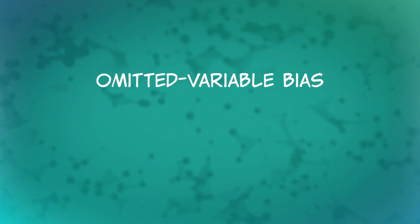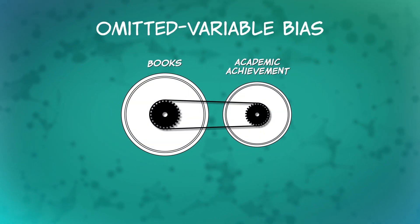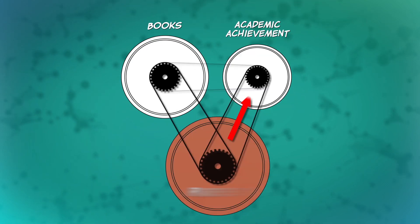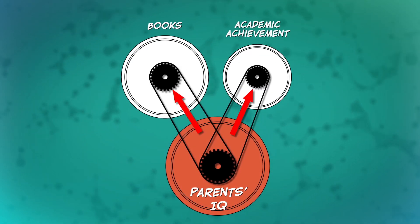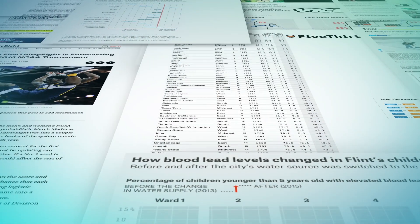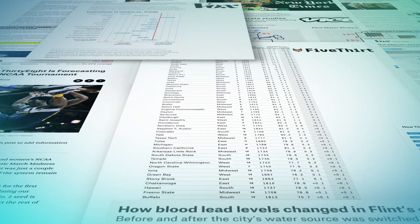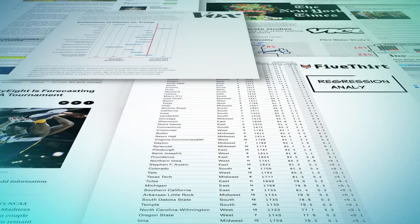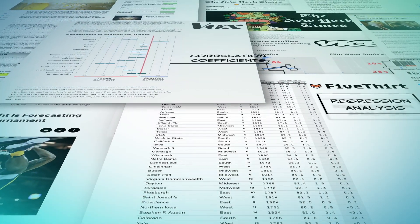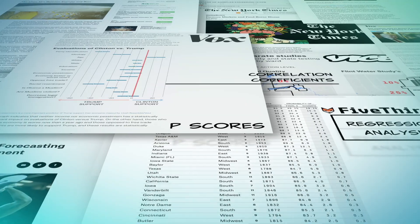Don't worry — these terms sound confusing, but they are not. Omitted variable bias just means you left out an important factor — in this case, your parents' IQ — when studying academic achievement. Understanding these terms, and more broadly understanding how to make sense of data, is a crucial skill in the modern world. Data analysis is spilling into almost every industry, and phrases like regression analysis, correlation coefficients, and p-scores are showing up everywhere.